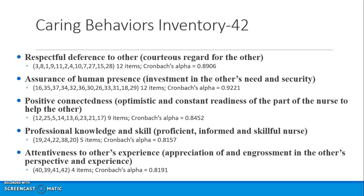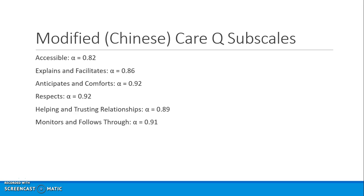Here's a reminder of the internal consistency reliability established on the original Caring Behaviors Inventory-42, with this slide duplicated from the previous set. The modified Chinese CRQ has six subscales — accessible, explains and facilitates, anticipates and comforts, respects, helping and trusting relationships, and monitors and follows through — and they report very good internal consistency reliability coefficients.